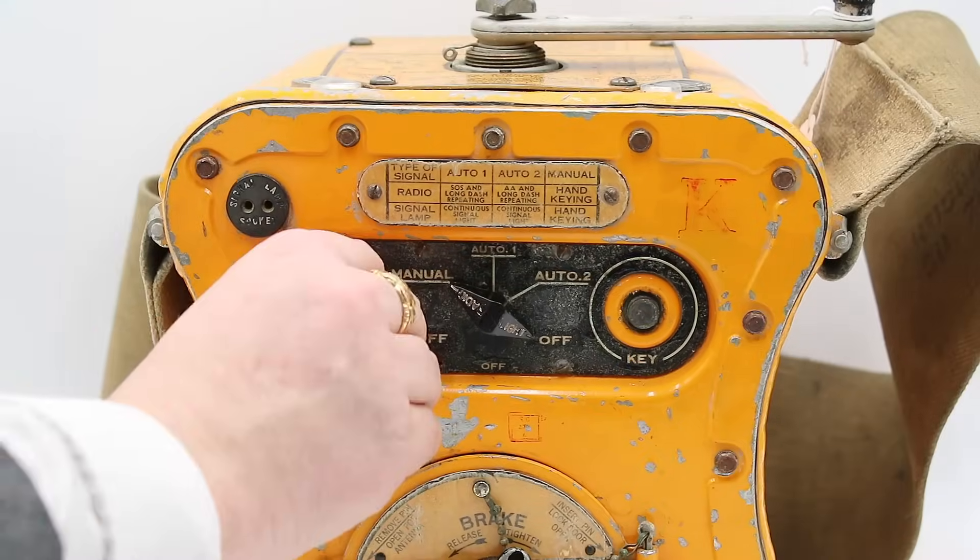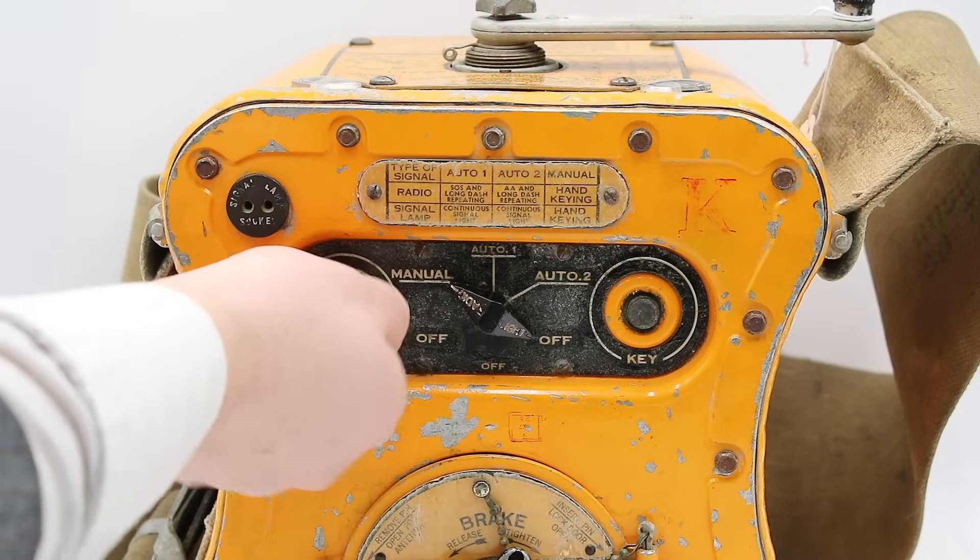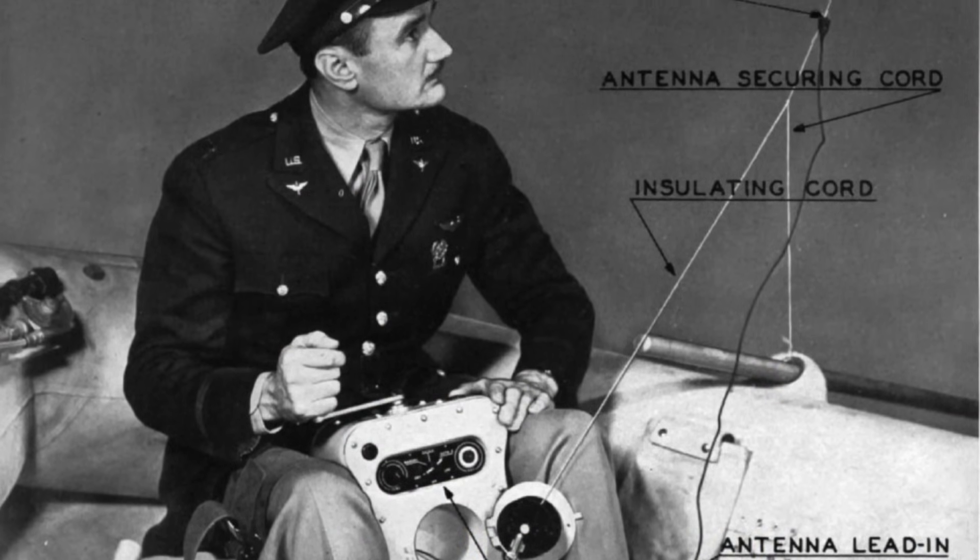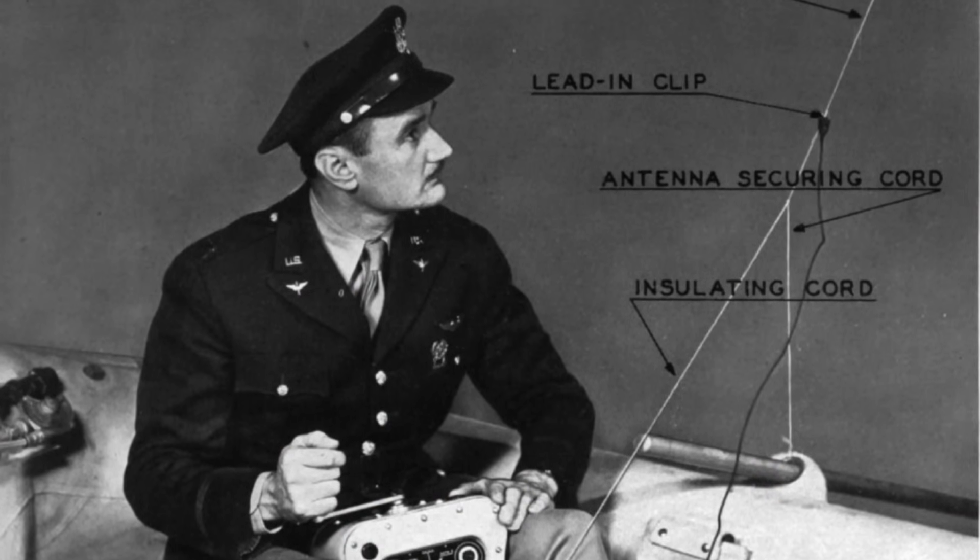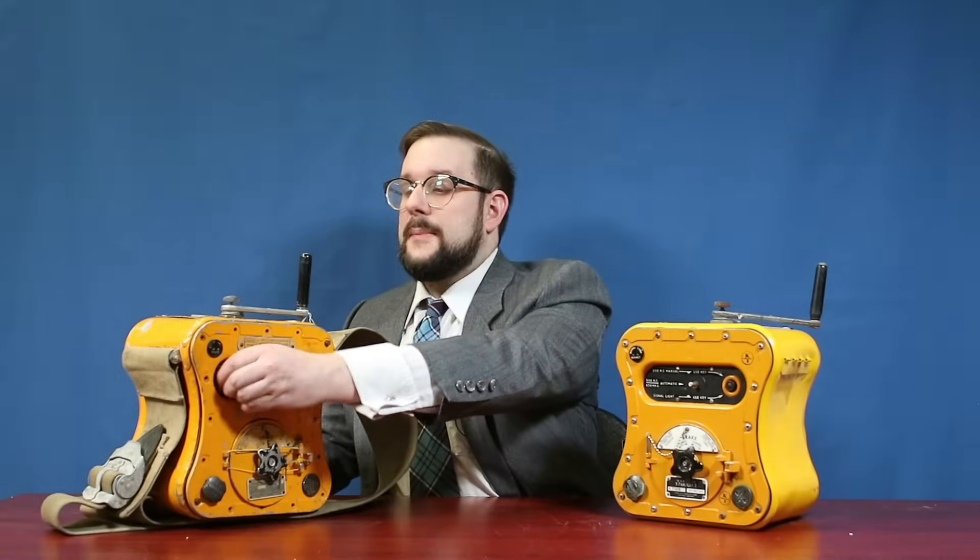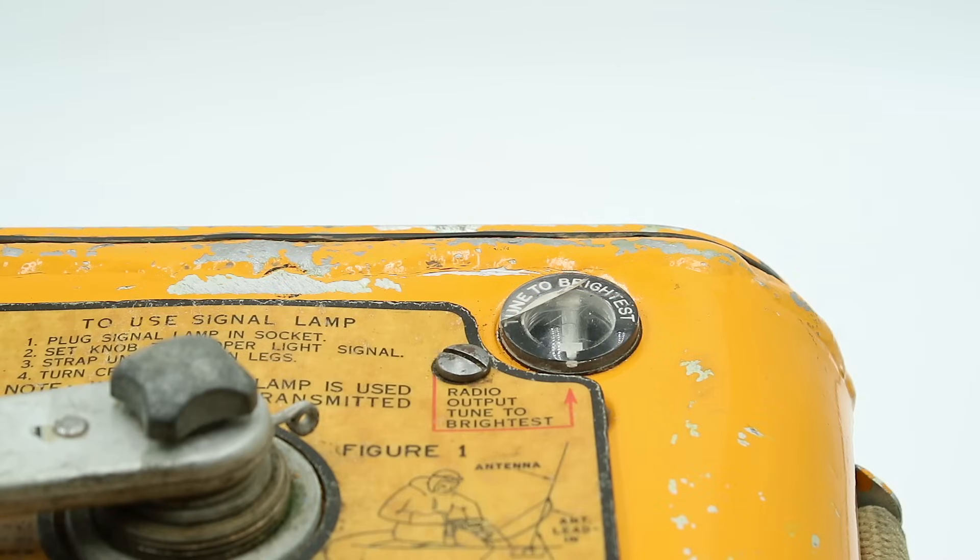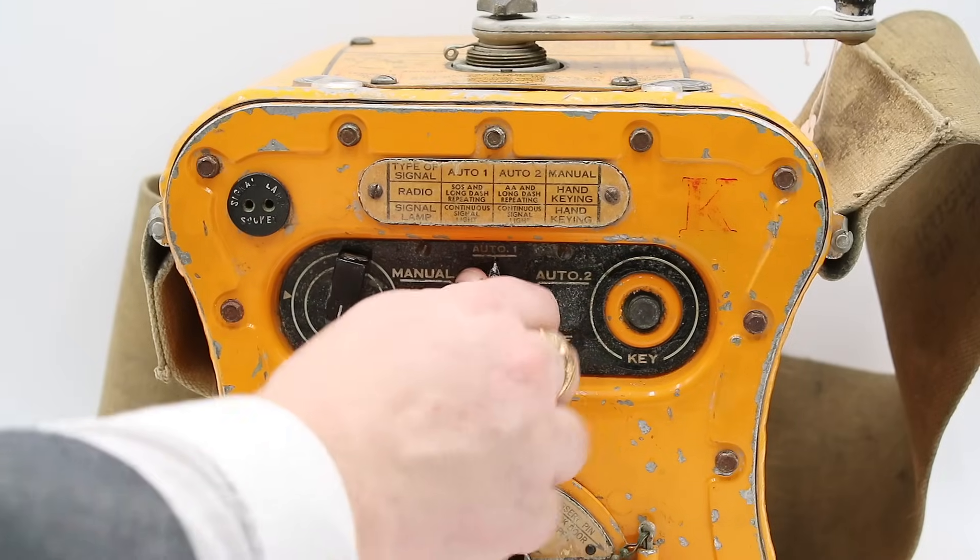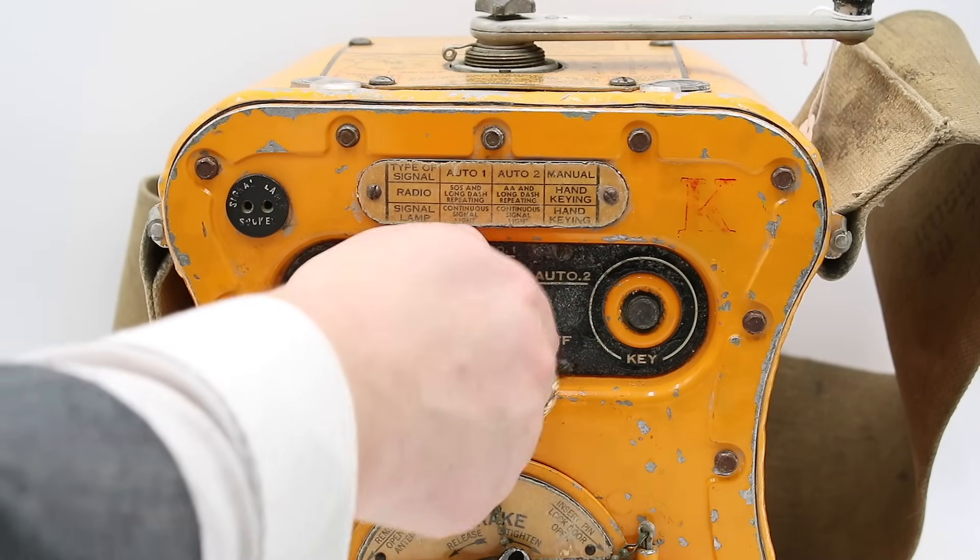And in terms of controls, the Model A had a tuning knob which allowed you to tune the antenna to the transmitter. And this allowed the transmitter to achieve peak performance even if the entire 300-foot antenna could not be extended to its full extent. And when you turn the knob, this indicator lamp on the top would glow more or less brightly indicating the degree of tuning. It would also flash along with the signal that was transmitted to indicate that the transmitter was properly driving the antenna.